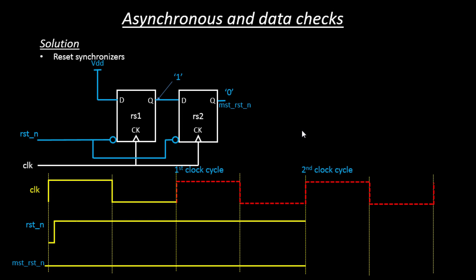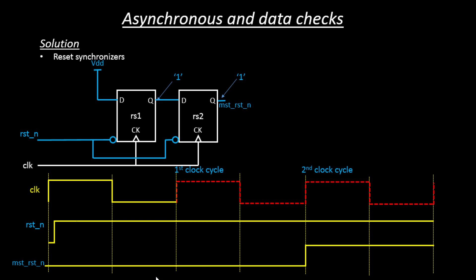In the second clock cycle, the input of RS1 will still be held at VDD because there is no activity on the reset end signal. The signal present at the output of RS1 will now enter into RS2 and move out of RS2. So your master reset signal has been set to logic one at the correct clock cycle. This actually solves the metastability issue because after the reset de-assertion that leads to metastability, it takes at least two clock cycles to reach a stable state.